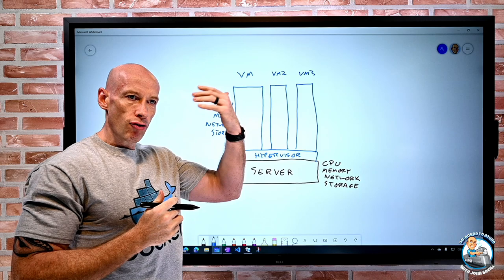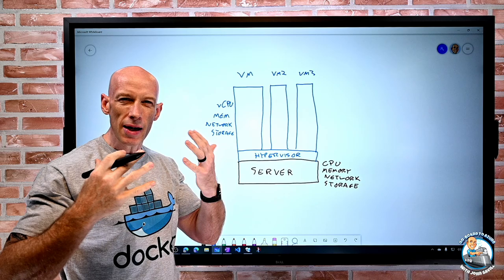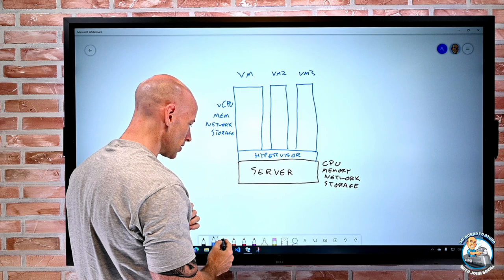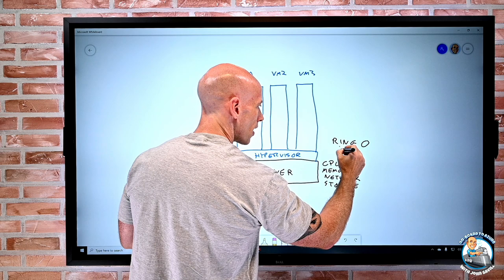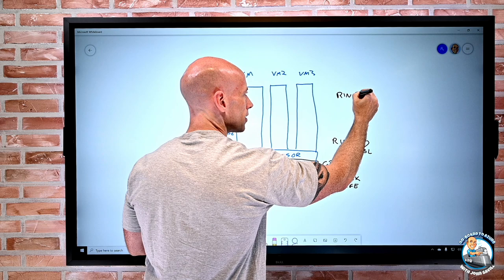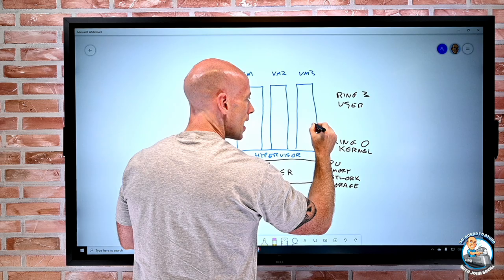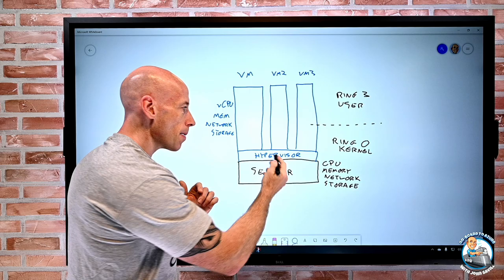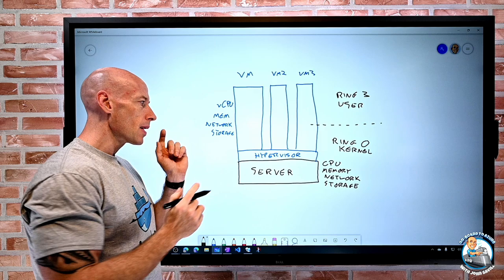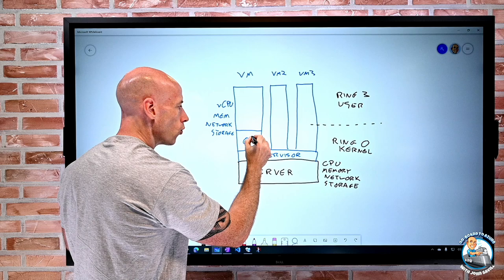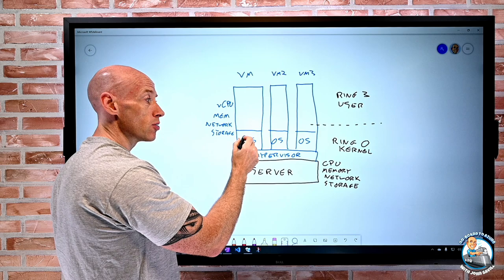The server itself has different elements in terms of kernel mode and user mode — really privileged core things. With these hypervisors you get this idea of kind of a ring zero — the kernel elements — and then kind of ring three, the user mode space. Within these virtual machines they see all of that because the hypervisor actually runs at this ring minus one thing in the processor. Within the virtual machine, each of them have their own operating system — it could be Windows, or Linux, whatever you want.